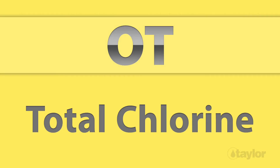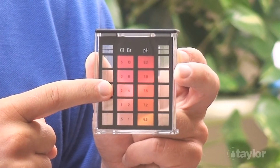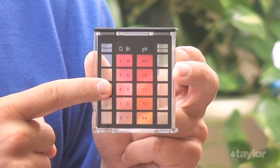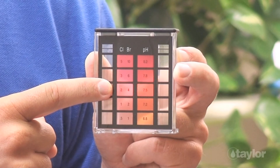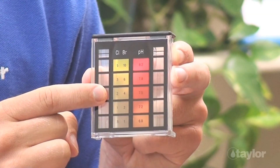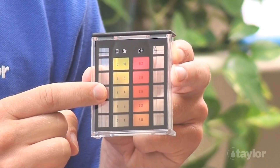DPD can distinguish between the free and combined forms of chlorine, while OT can only read total chlorine. A quick way to tell if a test kit employs the DPD method is to look at the color standards in the test block. If they are shades of pink, it's a DPD test. If they are shades of yellow, it's an OT test.